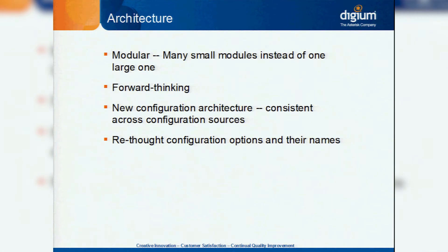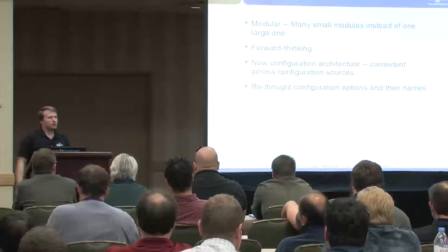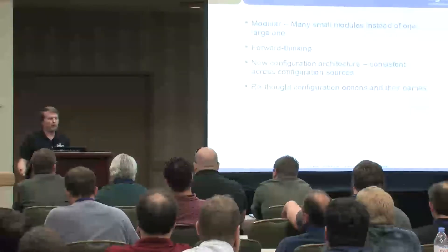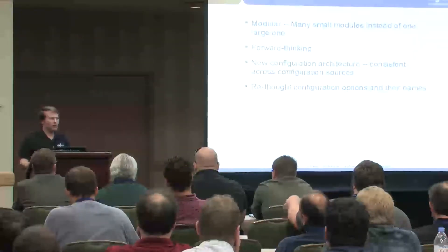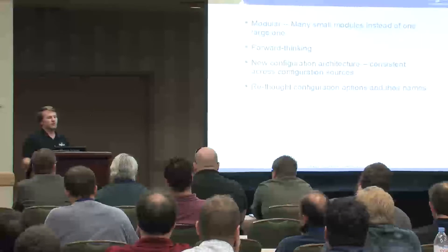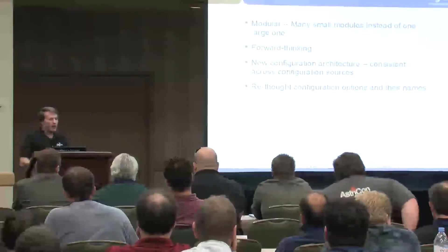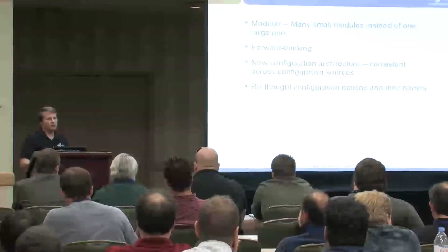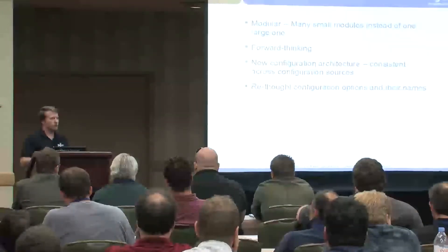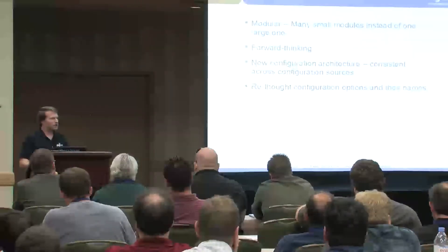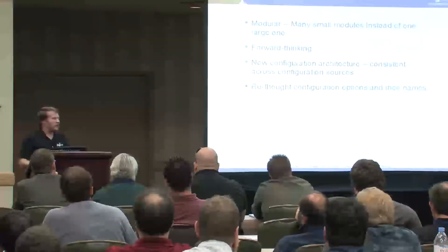We also created a new configuration architecture, because a problem with chan_sip was that people would report an issue, we'd try to reproduce it and it wouldn't happen, then we'd find out they were using dynamic real-time and that changed everything — so we had inconsistency. With the new configuration architecture, you get consistent behavior no matter what configuration scheme you use, whether a flat file or a back-end database.